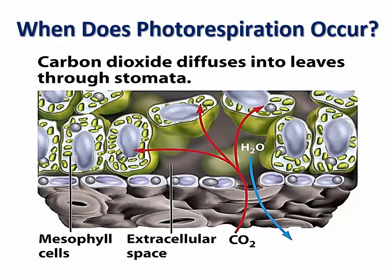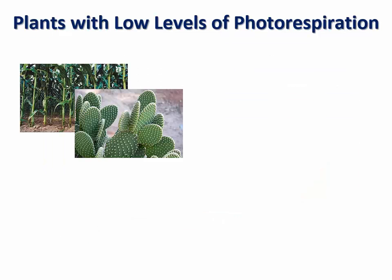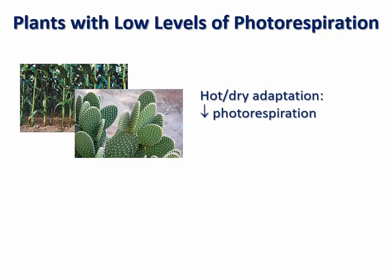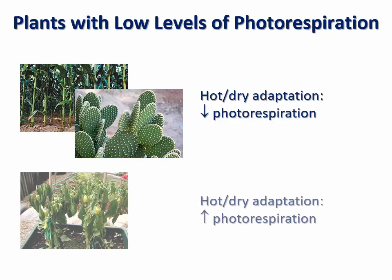When conditions are hot and dry, many plants must keep their stomata closed to prevent water loss. This causes a buildup of oxygen in the leaves as a result of light-dependent reactions. The buildup of oxygen in plant tissues results in photorespiration. Plants that are adapted to dry or hot conditions have lower and even negligible levels of photorespiration when compared to plants that are not adapted to such conditions.